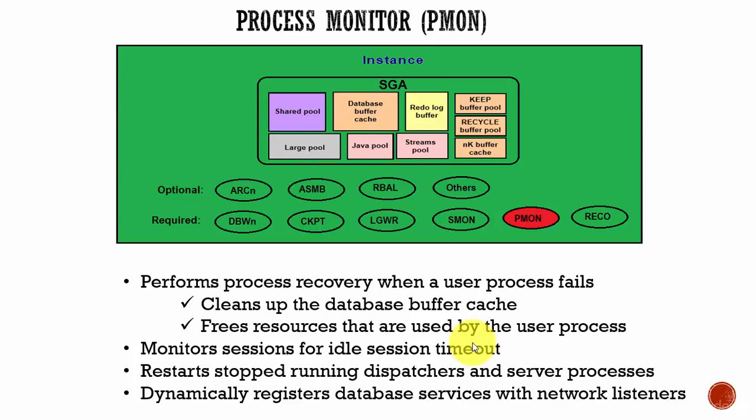The fourth point is it dynamically registers the database services with the network listeners. The process monitor regularly checks the status of the Oracle instance and updates the network listener saying the instance is active. If for some reason the instance is inactive or stopped, the process monitor immediately updates the network listener saying the Oracle instance is down.